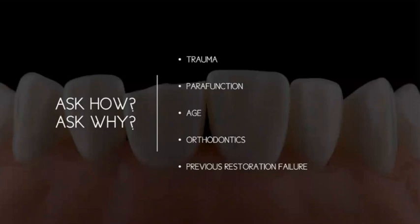Age and diet are very important. If someone comes in with tooth surface loss across most teeth and they're 75, that's expected. If they're 22, you've got to ask why — how did they get into this situation? Orthodontics is also relevant: teeth may be worn because they're misaligned with a crossbite, and you can't just build them up with an underlying orthodontic or skeletal problem.